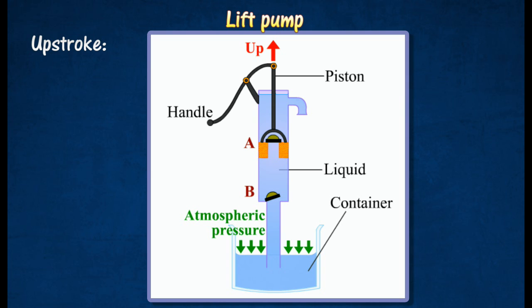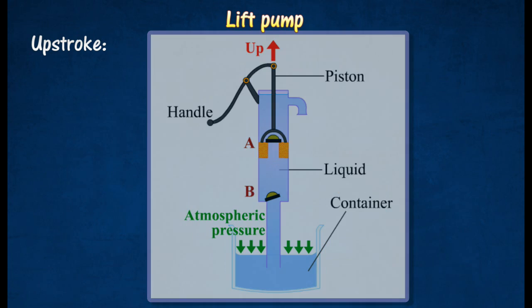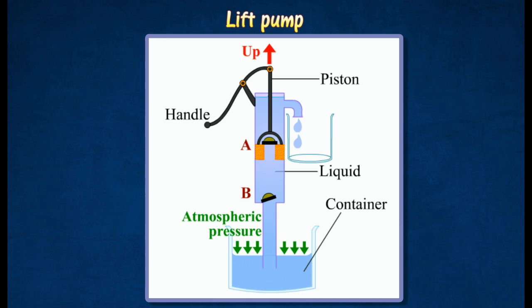The atmospheric pressure acting on the liquid surface drives the liquid upward. On subsequent strokes, the liquid completely replaces the air in the barrel, and after a few such strokes, the liquid will flow out of the spout.